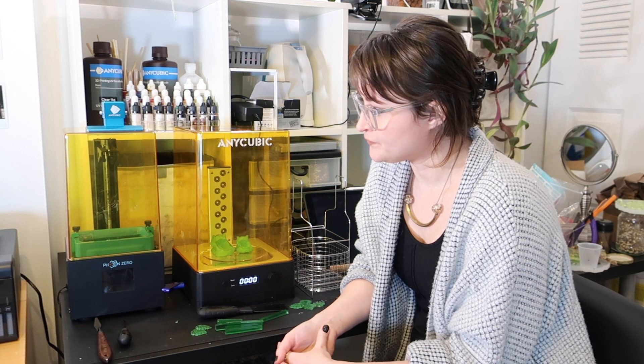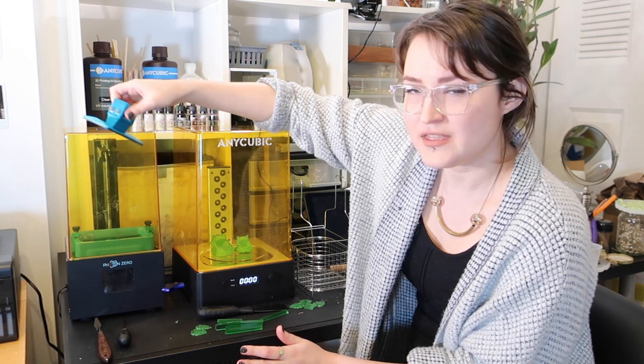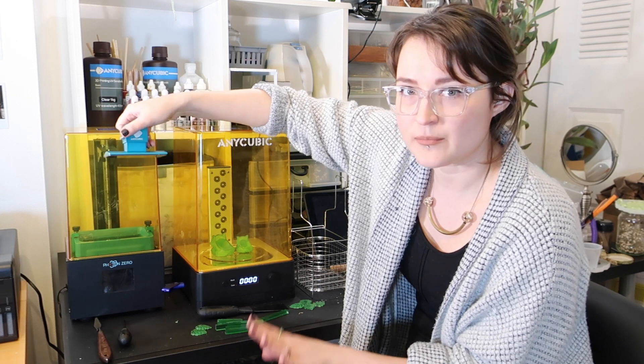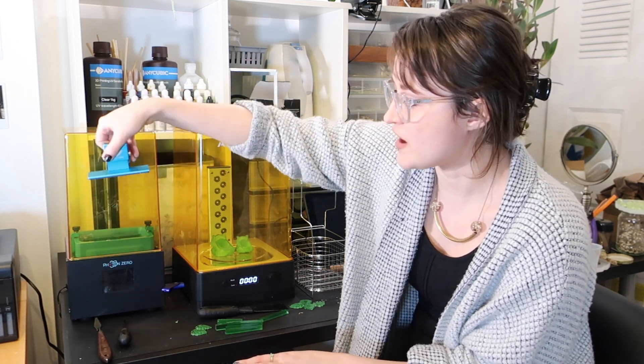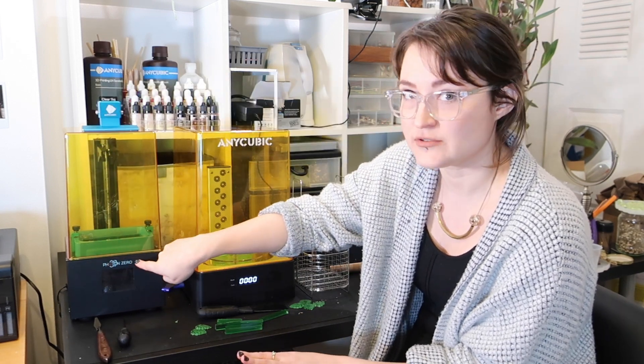Now if you don't know how resin printers work, I can explain. With these, I think the reason that they can be so cheap is because there's very few moving parts. Basically this just goes up and down into this vat of resin and below this vat of resin is an LCD screen.